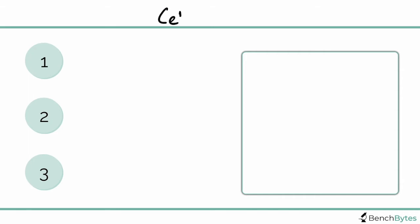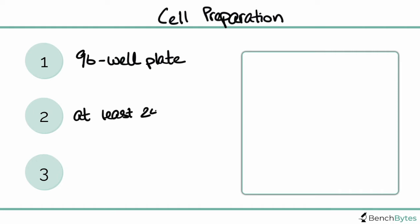Now that we have our stock solution prepared, the next thing we need to prepare is the cells for the assay. You want to plate your cells in a 96-well plate at a density of about 2,000 to 5,000 cells per well. You want to do this at least 24 hours prior to running your assay, and longer if you need to do treatments.